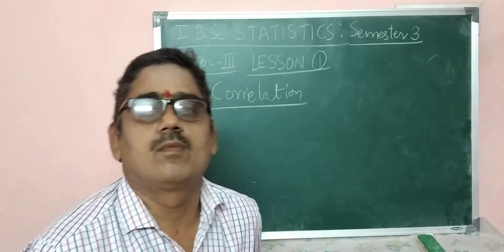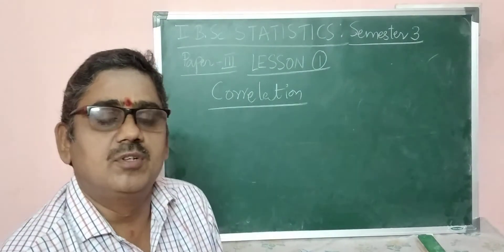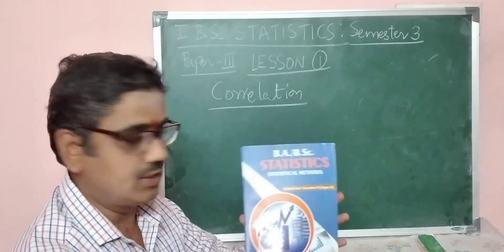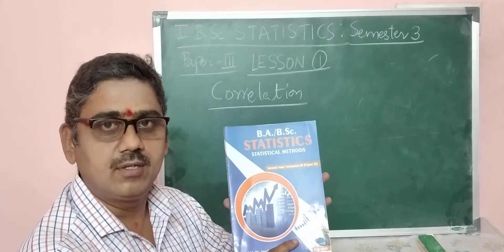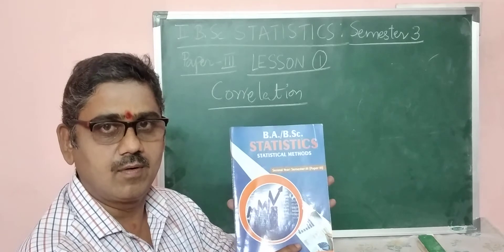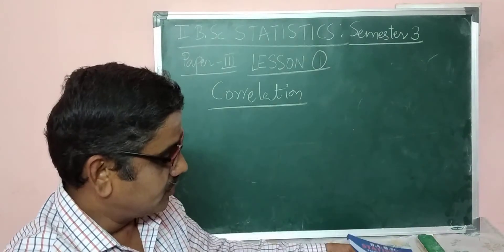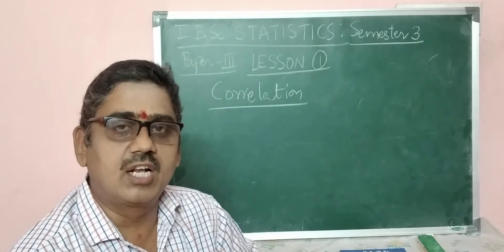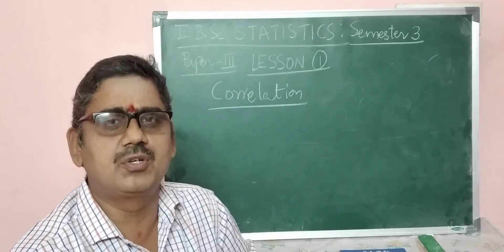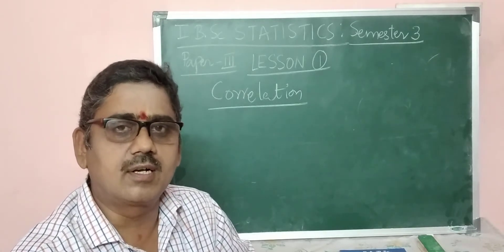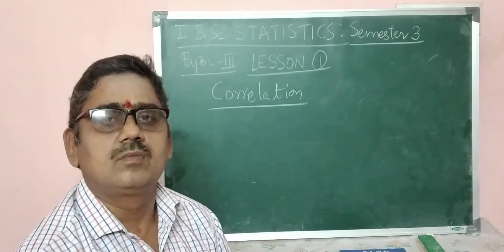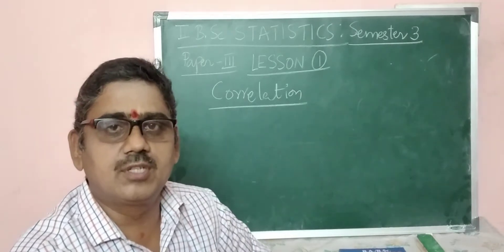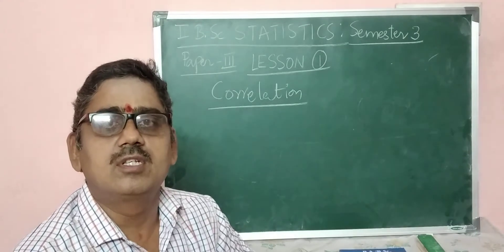Good morning students. In second year, semester 3, we have a paper titled Statistical Methods. This is the textbook we can follow from Kalyani Publishers. In statistical methods, we have 5 topics in 5 units: correlation, regression, and remaining topics of regression, correlation, ratio, partial correlation, multiple correlation, curve fitting, theory of attributes, and exact sampling distributions.